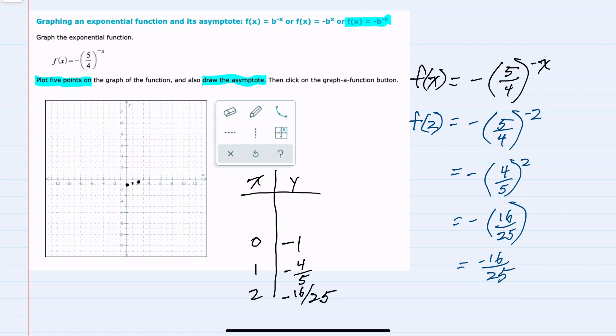To substitute in a couple of negative values, I would start with x equals negative one. Notice that this substitution, replacing x with negative one, would give me the opposite of negative one as the exponent, so a positive one, which once simplified would give me a negative five-fourths. So we have the point negative one, negative five-fourths. Negative five-fourths is one and a fourth, so negative one and a fourth.